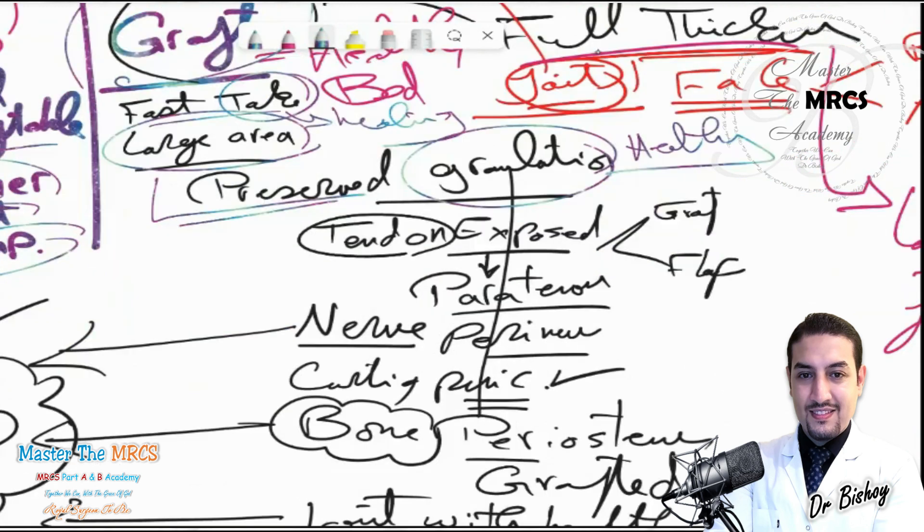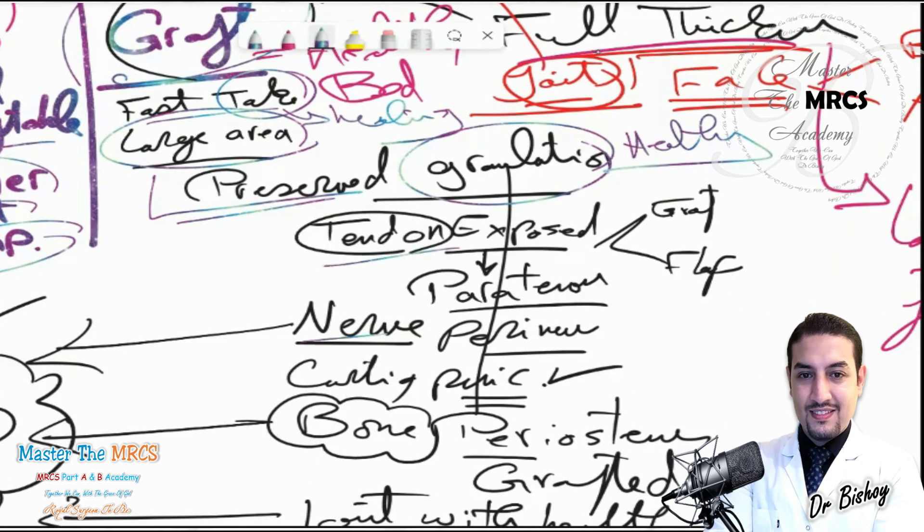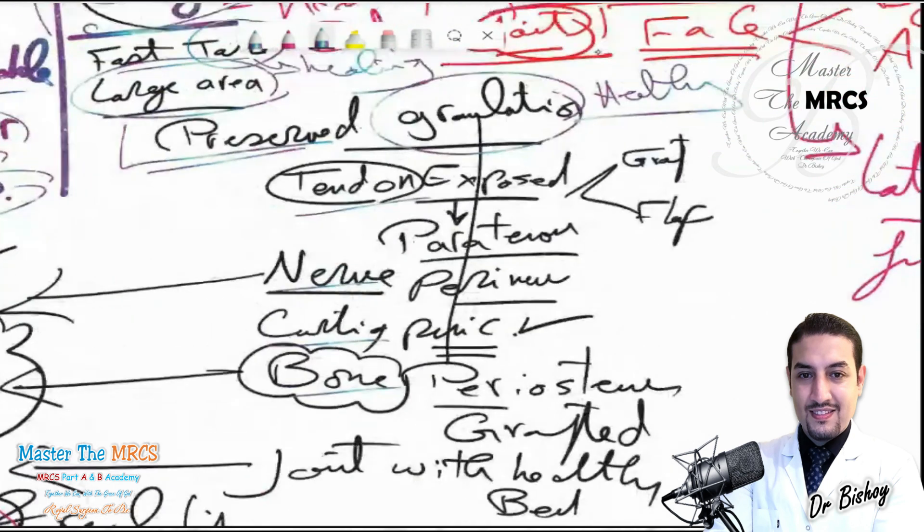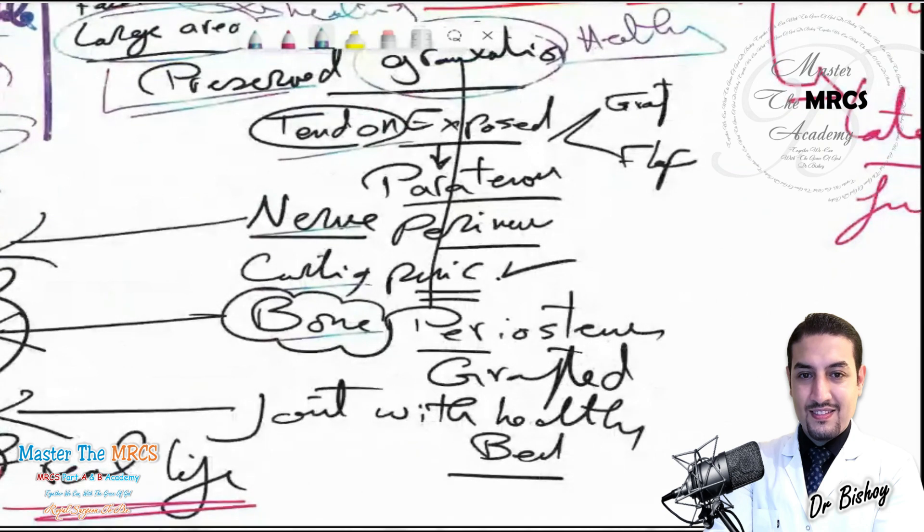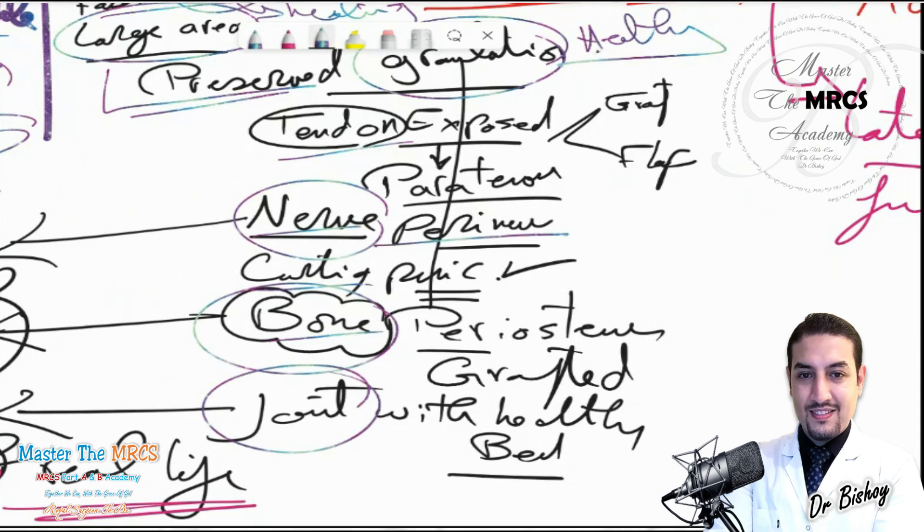So if you have a tendon or a nerve or a cartilage, even a bone or intestine or a joint, I suppose you can cover always with a graft. But take care, because the nerve and the bone and the joint are not the best to be covered with a graft, even if the perineurium or the periosteum or healthy bed of the joint is already preserved.